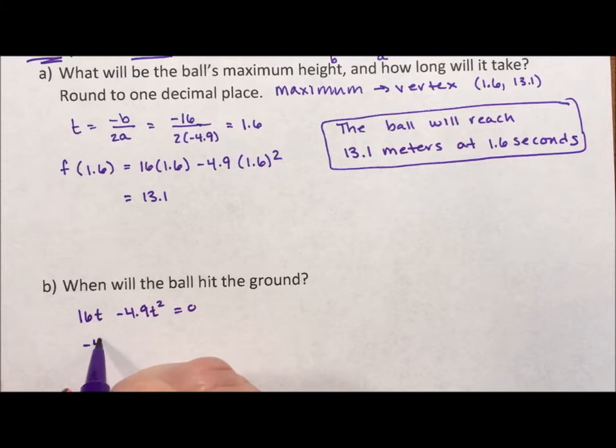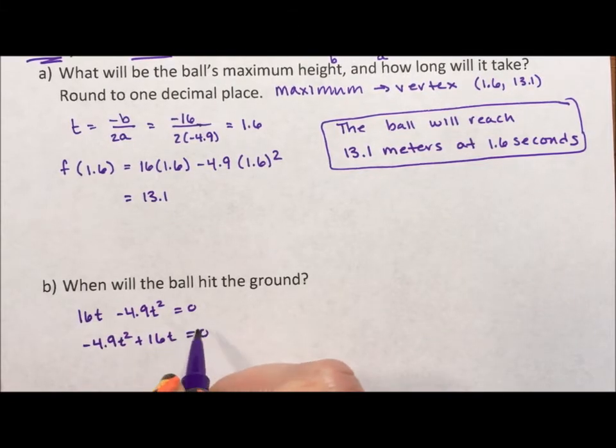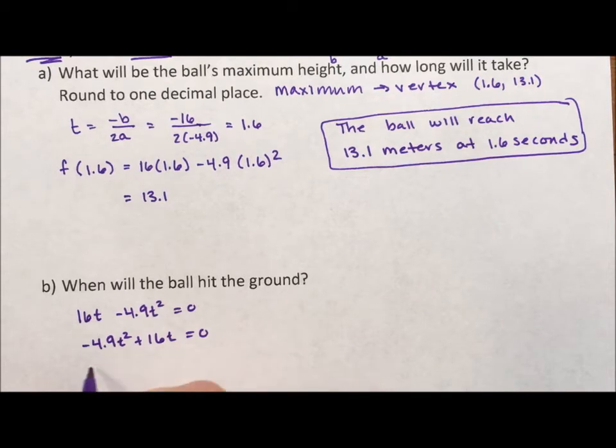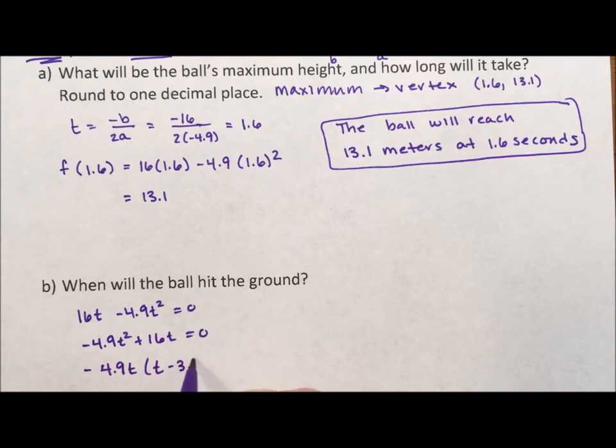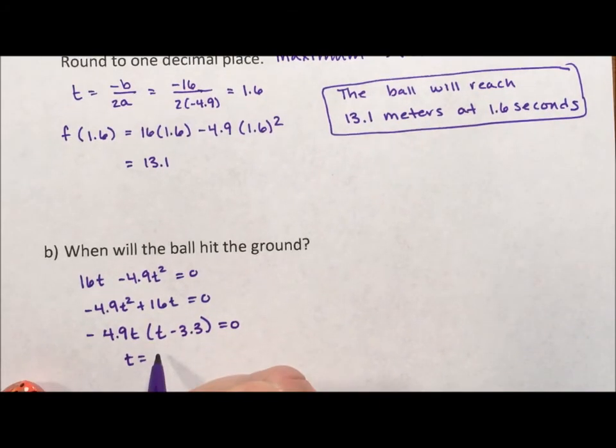First thing I'm going to do is rewrite this as negative 4.9t squared plus 16t. And then I'm going to factor out the negative 4.9t. I'm going to be left with t minus 3.3, again rounding to one decimal place. So t is going to equal zero or 3.3.